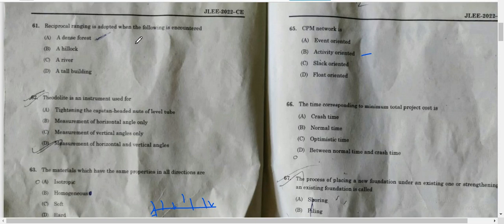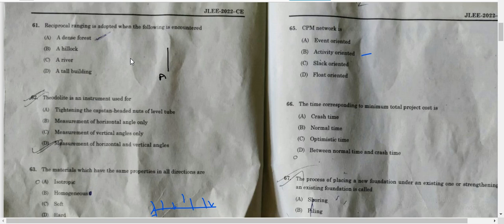The first question is: The reciprocal ranging is adopted when the following is encountered. Reciprocal ranging is nothing but a process of leveling. It is one kind of indirect ranging. Reciprocal ranging is generally adopted when there is an intervening ground. That means, if the ranging rod B is not visible from station A. If between A station and B station there is a hill or mountain, then A station and B station will not be visible to each other.